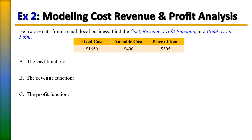In this next example, we need to find the cost, revenue, and profit functions, as well as the break-even point for a small local business. The fixed cost is $1,650, the variable cost is $400, and the price of the item is $305. The cost function is C(x) = 400x + 1,650. The revenue function — price times quantity sold — is R(x) = 305x.